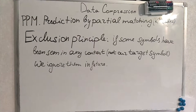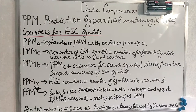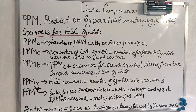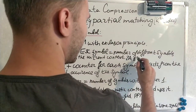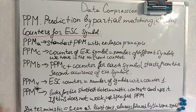A very important concept for Prediction by Partial Matching is the exclusion principle: if some symbols have been seen in any higher context but they have not been our target symbol, we ignore them in future lower contexts. There are also different versions of PPM. PPM A is the standard way of doing the PPM algorithm with the exclusion principle. In PPM C, the counter of the escape symbol equals the number of different symbols we have in the current context. For example, if we have seen two A's and one B, the number of symbols is three but the number of different symbols is two, so the counter for the escape symbol will be two.